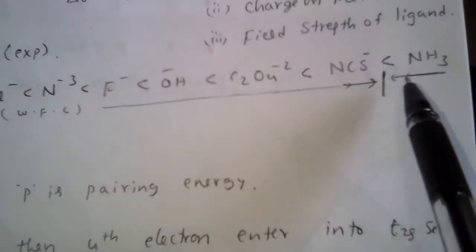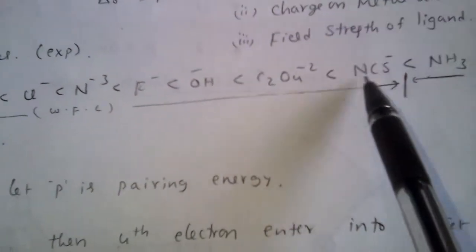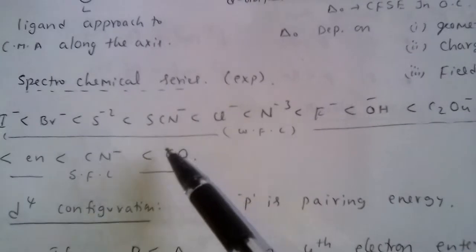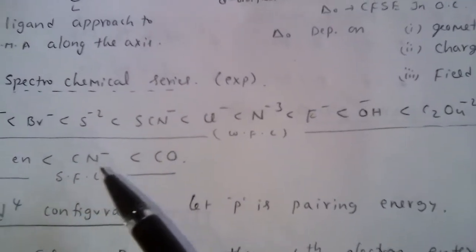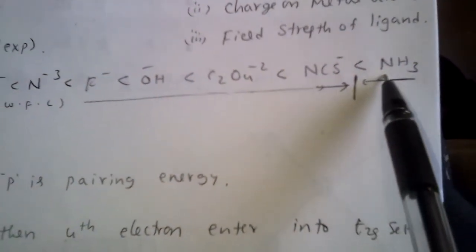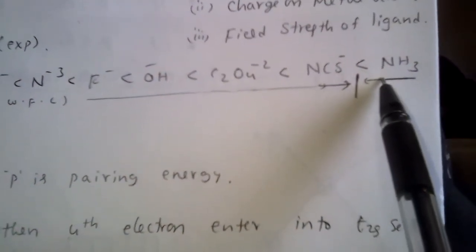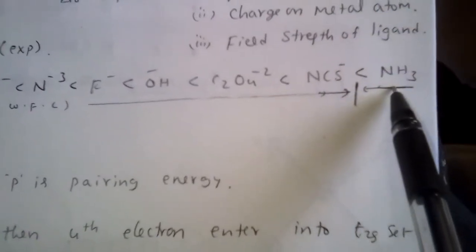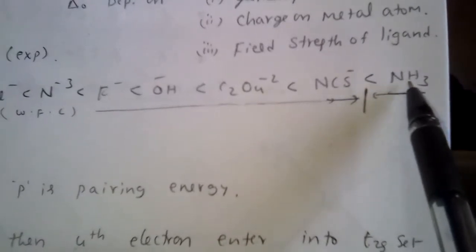In the spectrochemical series, ligands up to NH3 are known as weak field ligands. NH3, EN (ethylenediamine), CN⁻, and CO are known as strong field ligands. Note that NH3 acts as a strong field ligand only in cobalt complexes; in all other complexes it acts as a weak field ligand.